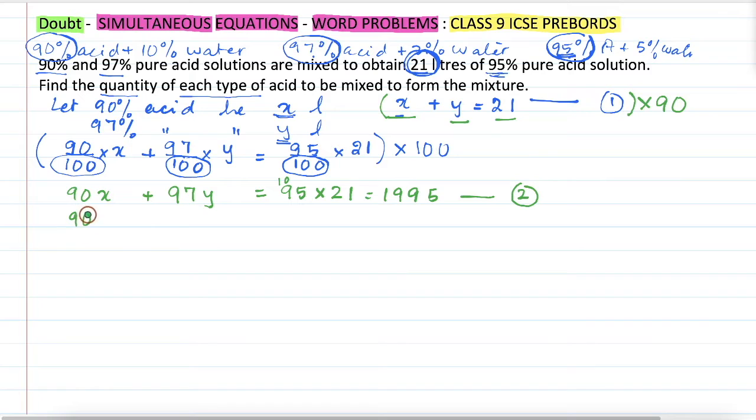So it will be 90x plus 90y equal to, now 21 into 9 is 189, so it will be 1890, and this is our equation 1.